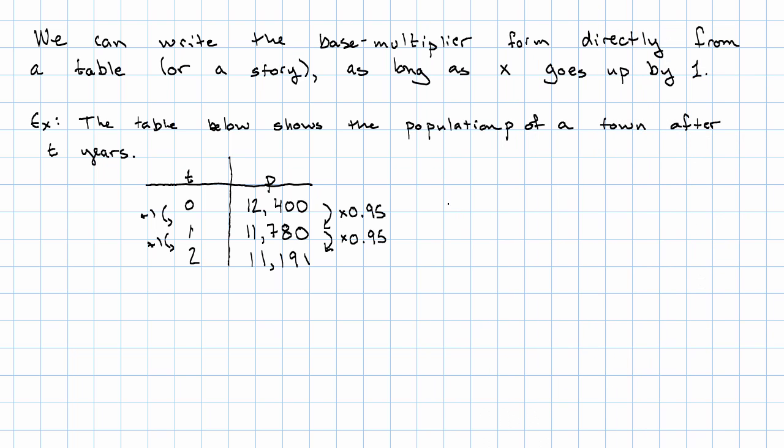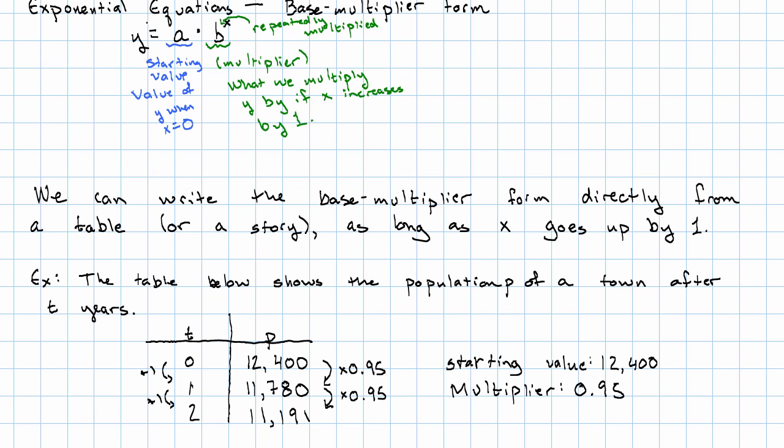We get the starting value is 12,400. The multiplier is 0.95. Looking at the base multiplier form, my equation is y equals the starting value, 12,400 times the multiplier, 0.95 to the power t, to the power of my independent variable.